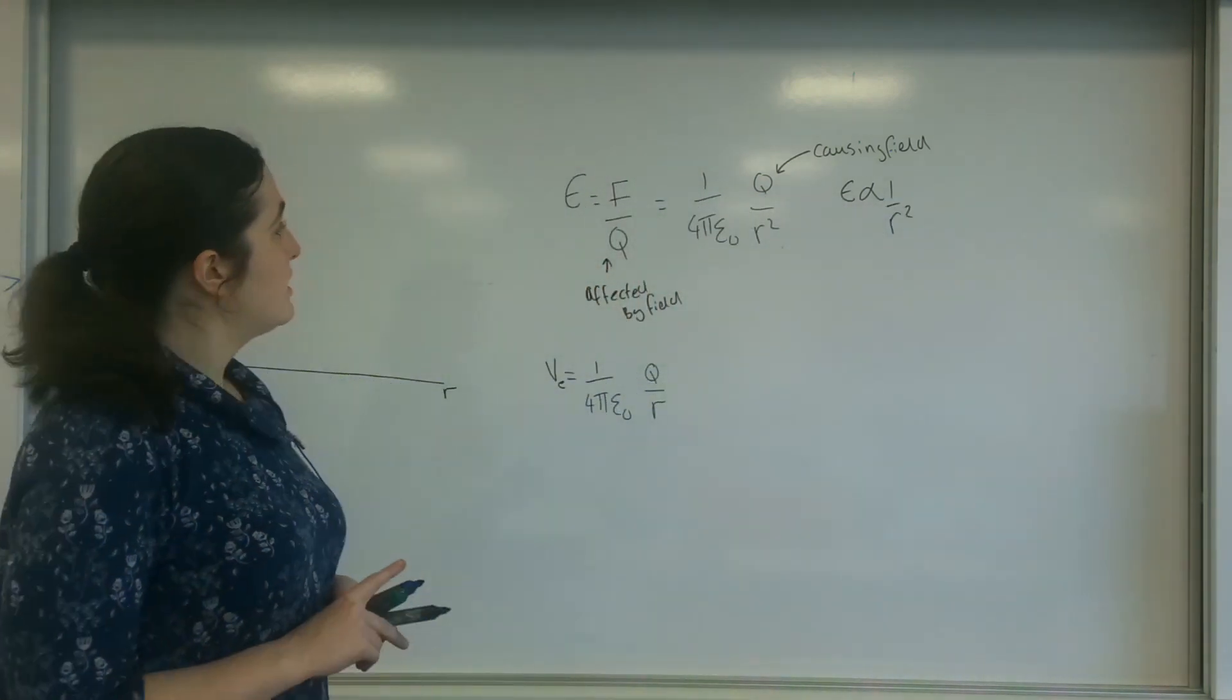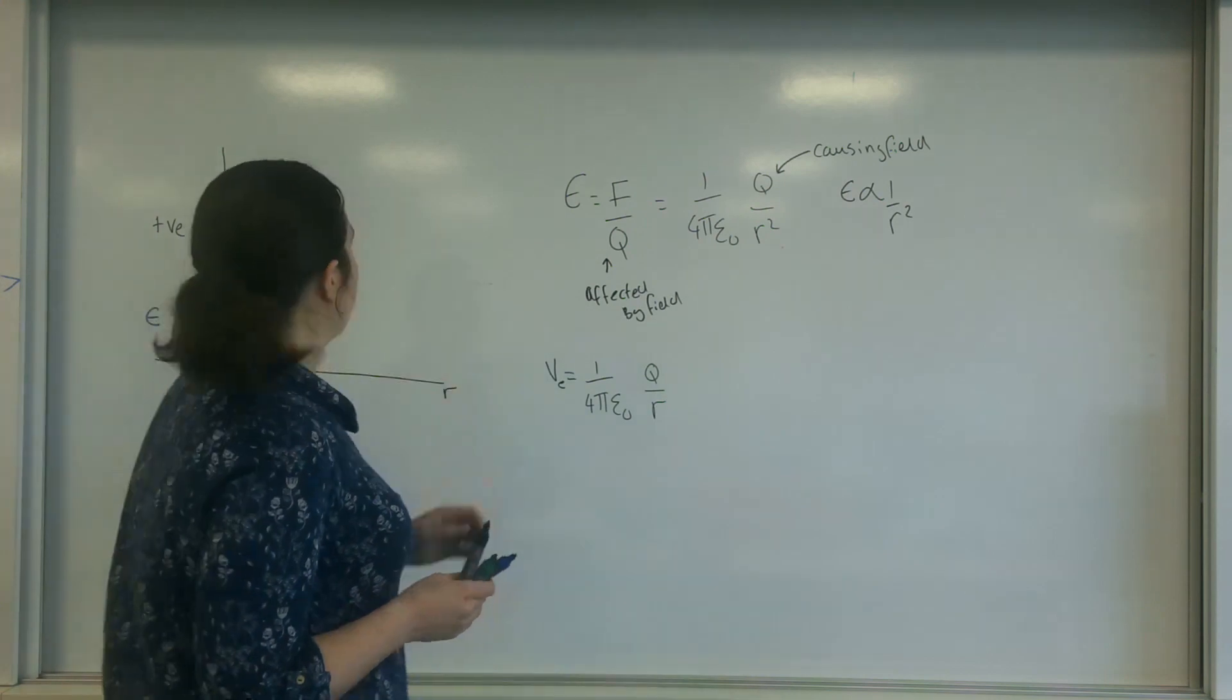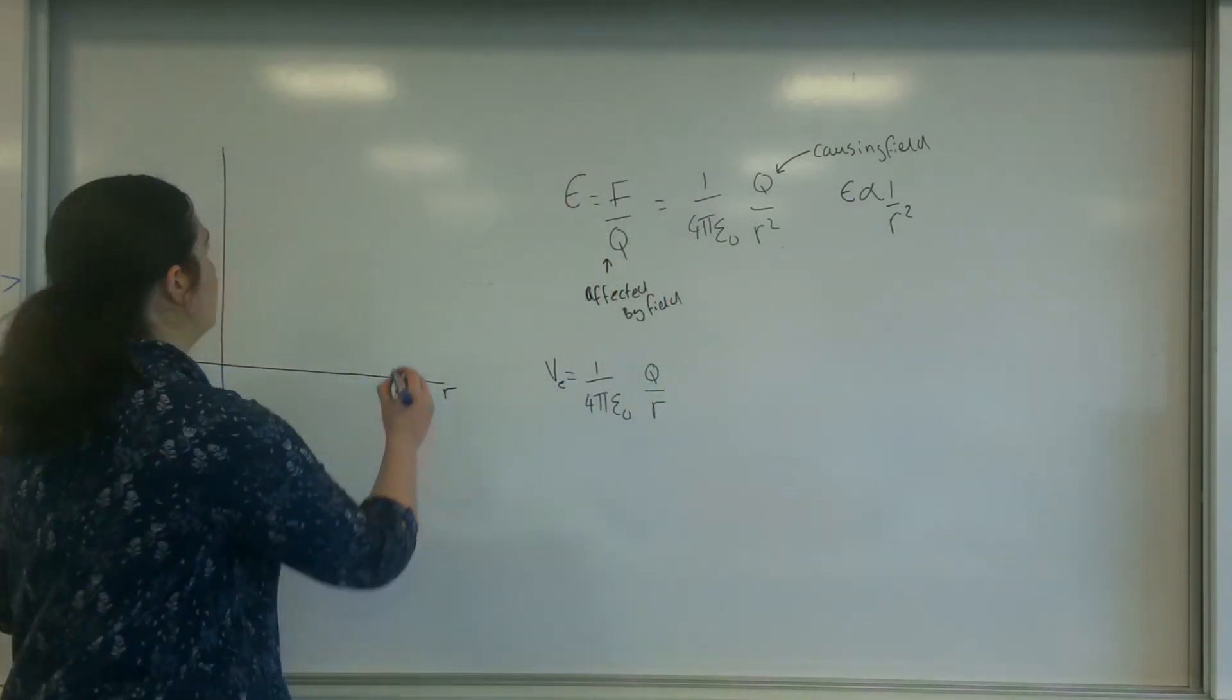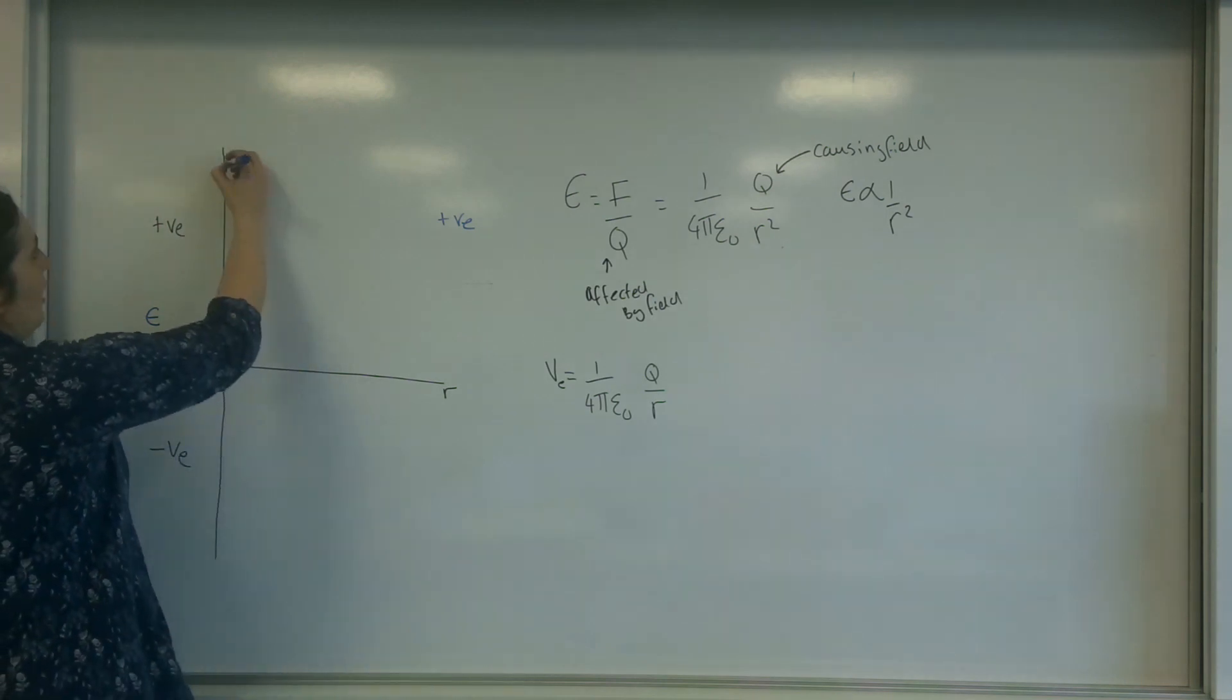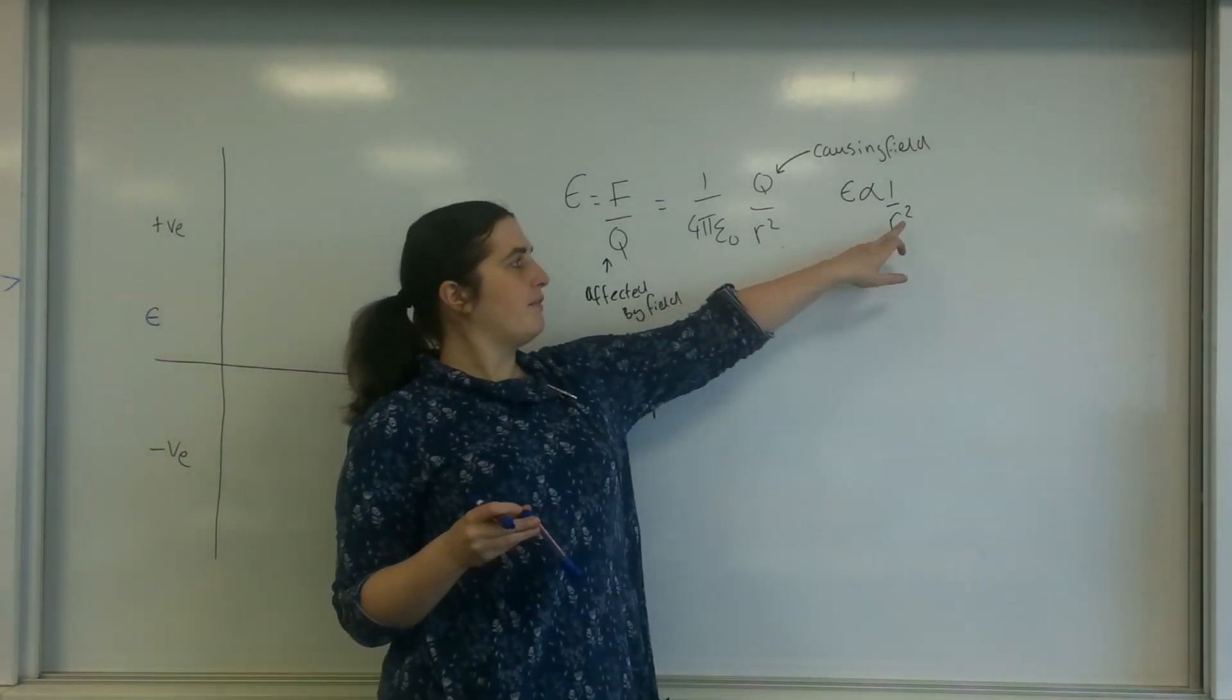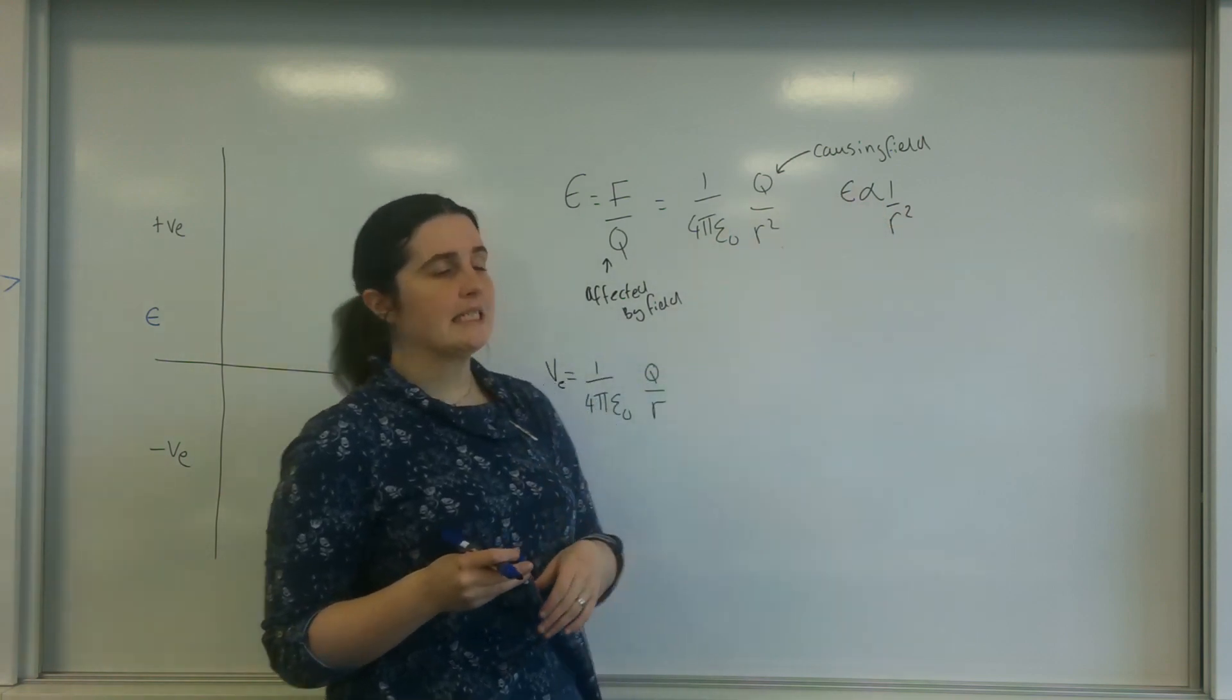But of course, this does depend on if the charge is positive or negative. So field strength here, if I have a positive charge, I'm going to do positive in blue. I'll have a field strength when I'm zero away, I'll have infinite field strength here. So when I'm at the surface of the charge or in the center of the charge, I would have maximum field strength. And then as r tends to zero, this will tend to infinity.